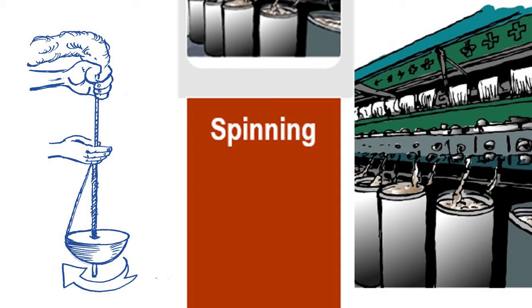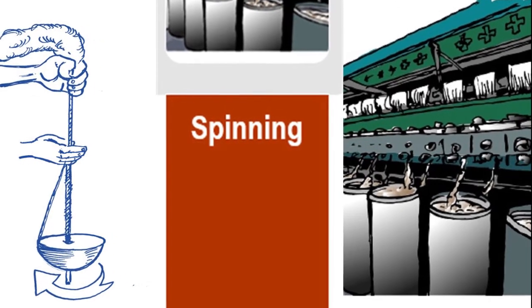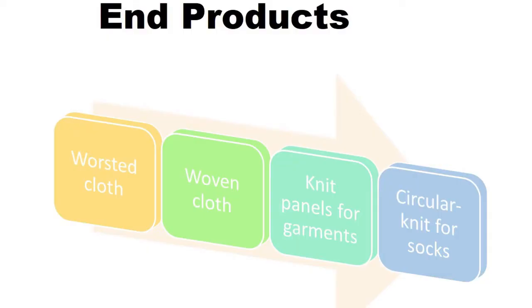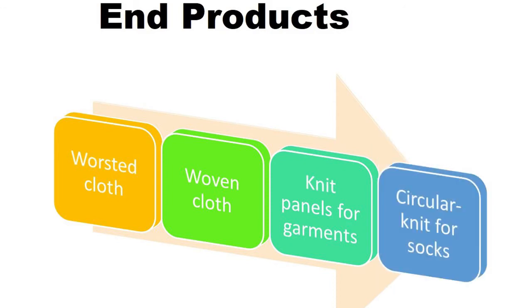There are a number of end products produced in the factories. These include worsted or woven cloth, yarn knitted into panels for garment production, and yarn which has been circular knitted for socks.